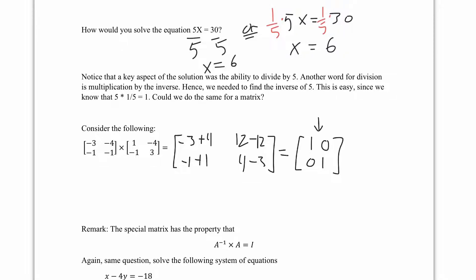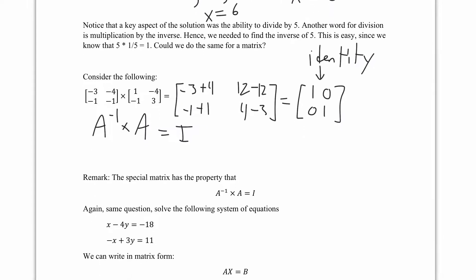The identity matrix is like the matrix version of the number 1 — it doesn't change anything when you multiply by it. So our matrix A multiplied by that special matrix gives I. That special matrix is indeed the inverse of A, written A inverse, because multiplying them produces the identity.